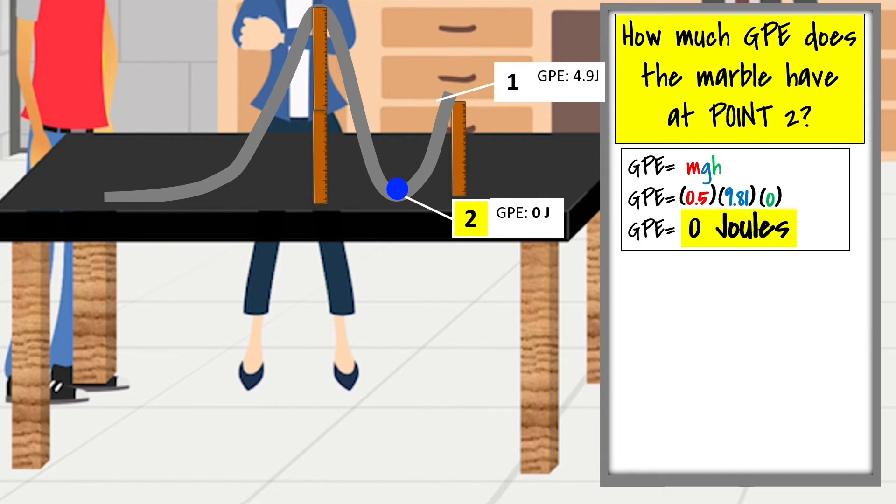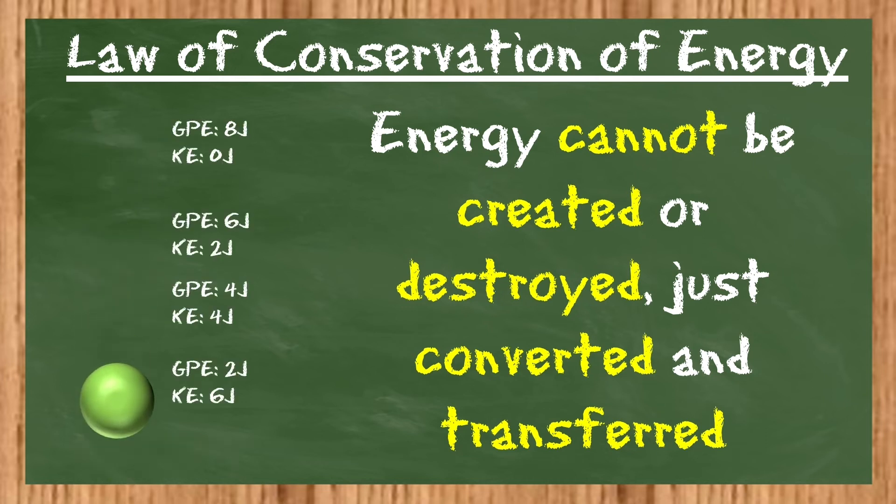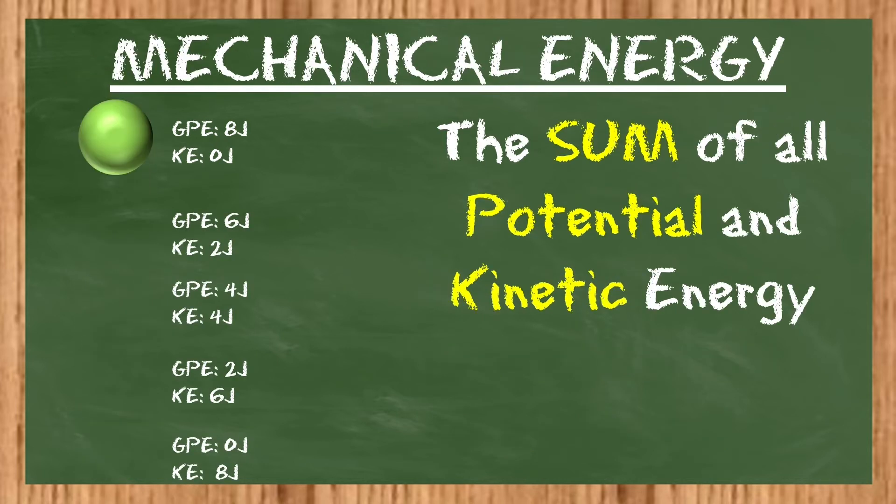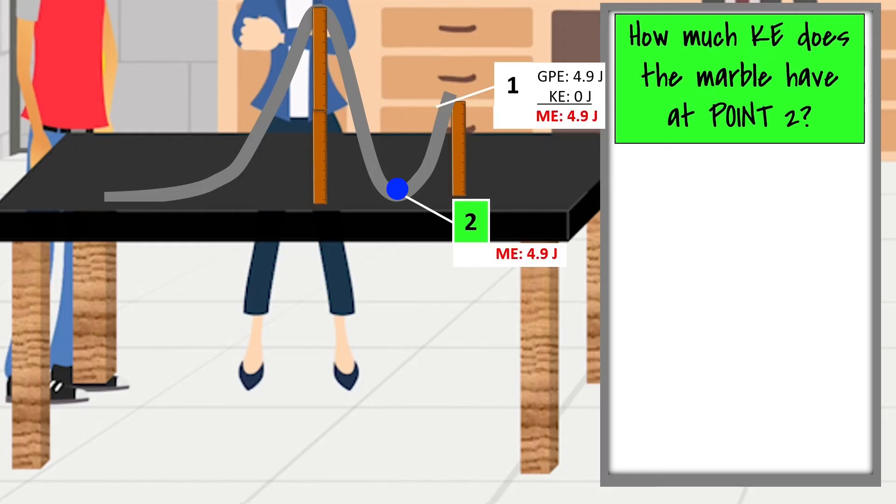So anyway, how much GPE would it have down here? None. It's at its lowest point, right? Where did that energy go? Well, think about how it would even get down there in the first place. It takes energy to move potential energy, and that potential energy wasn't destroyed. It was converted to kinetic energy as it moved downward. The total amount of energy, which is known as mechanical energy, will always be the same in a closed system. The total amount of energy you have in the beginning will be the total amount of energy you have at the end in every single point on this coaster.